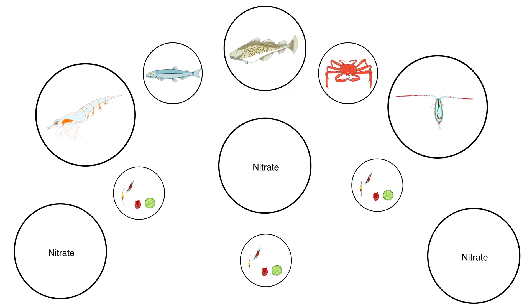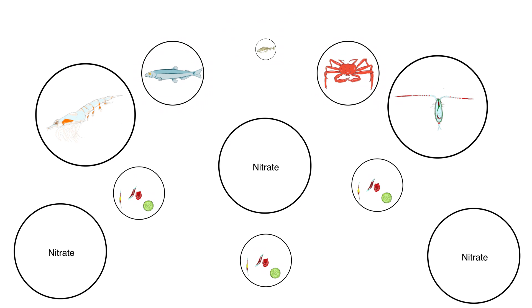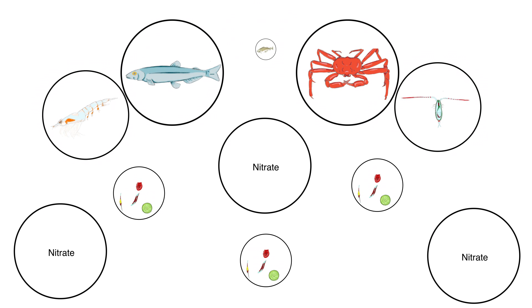However, once overfishing removed the large cod from this system, populations of small fish and crab boomed.